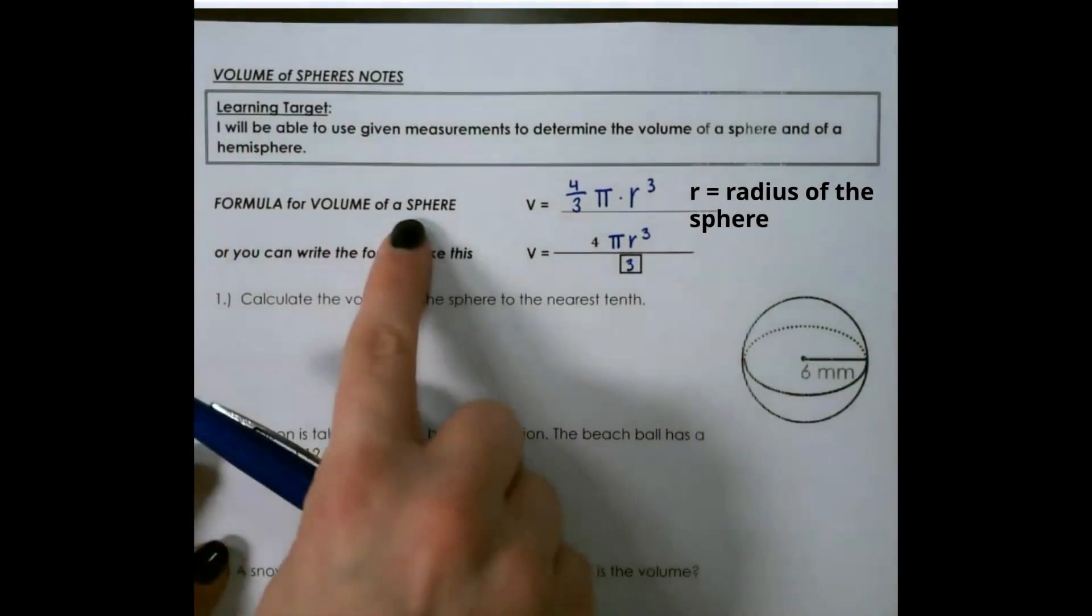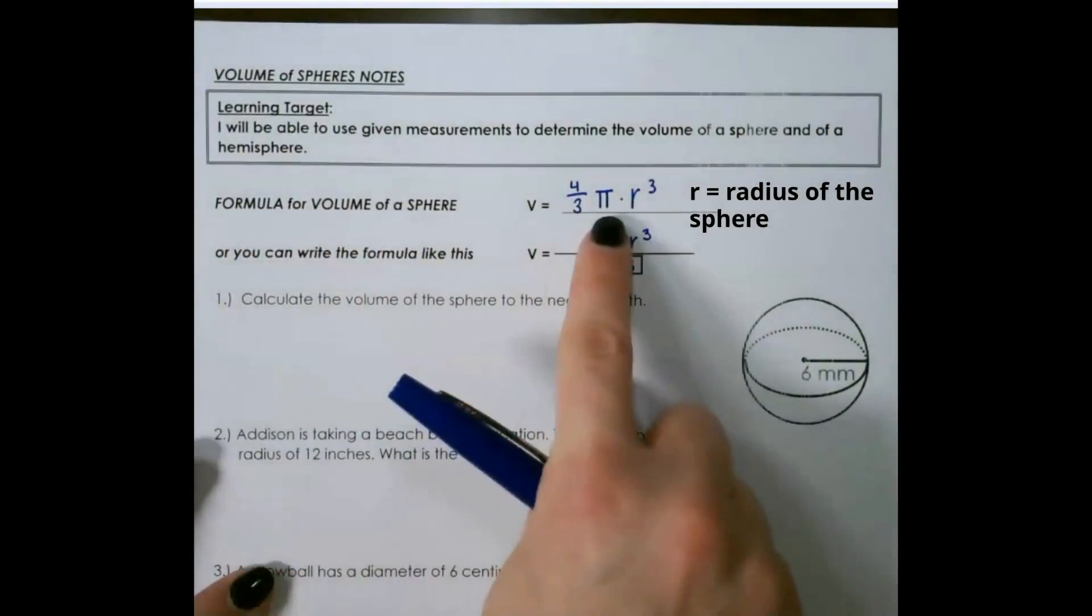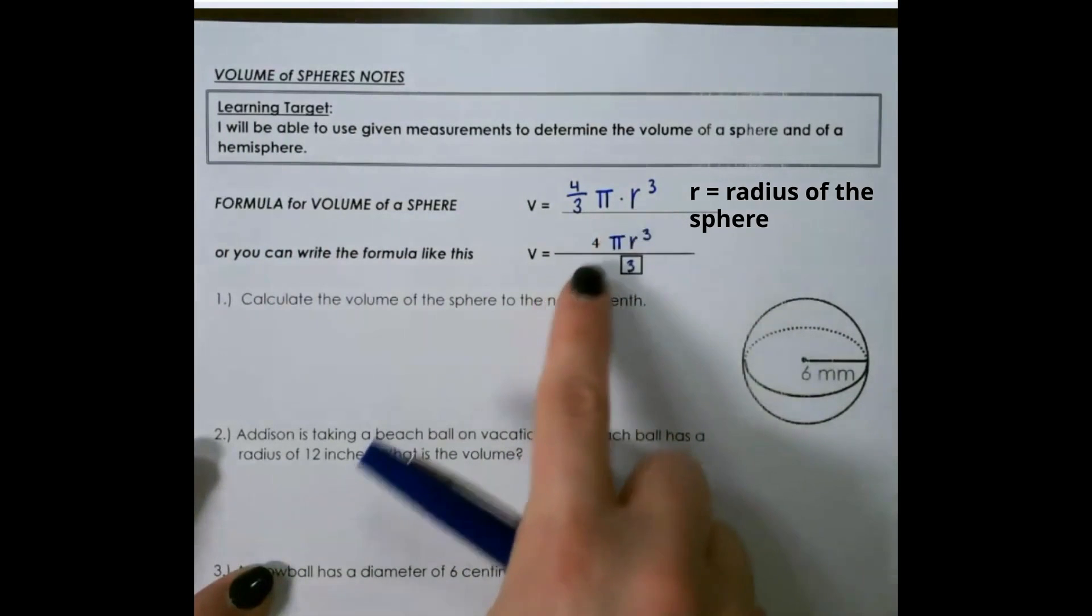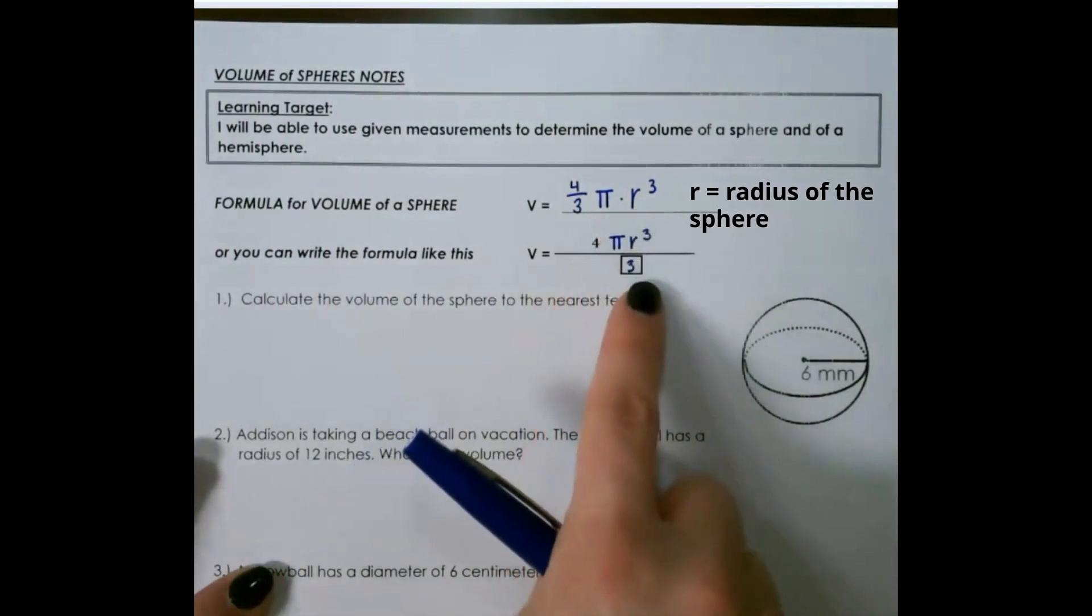Let's look at the formula for volume of a sphere: four-thirds times pi r cubed, or four times pi r cubed divided by three.